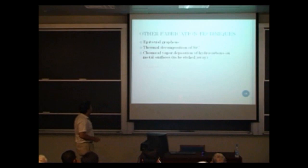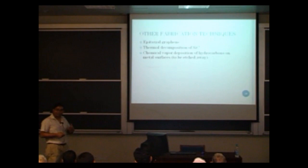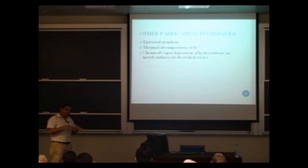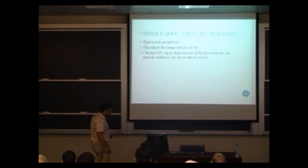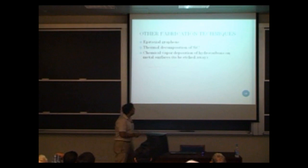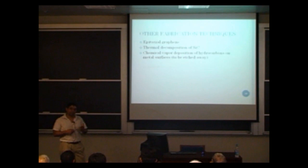Nowadays there are various other fabrication techniques. One is epitaxial growth of graphene, where silicon carbide is heated to very high temperature such that silicon atoms evaporate away, leaving behind a graphene sheet on the substrate. Another method is chemical vapor deposition of hydrocarbons, where hydrocarbons are introduced and catalytic metal surfaces leave graphene sheets on top; the substrate can then be etched away to obtain graphene. The original micro-mechanical cleavage method of Geim and Novoselov was a good proof-of-principle method — the early experiments were done on it — but it was not a method for producing large-scale graphene sheets. The epitaxial and CVD methods are more relevant to producing large areas.